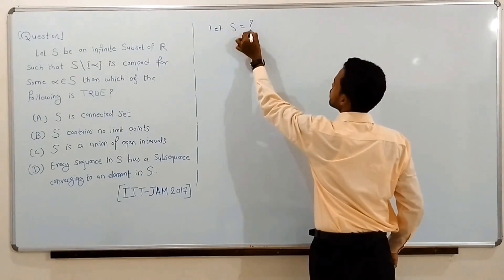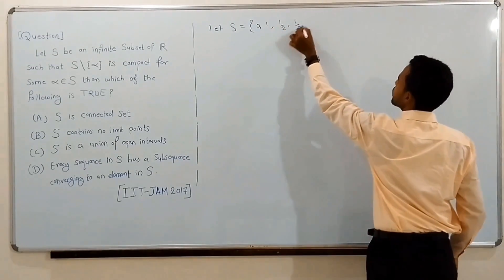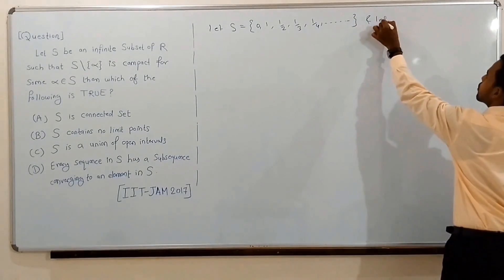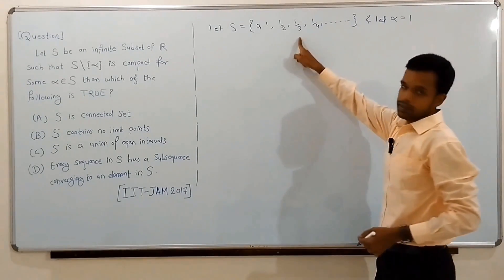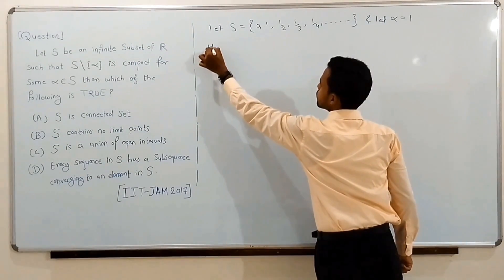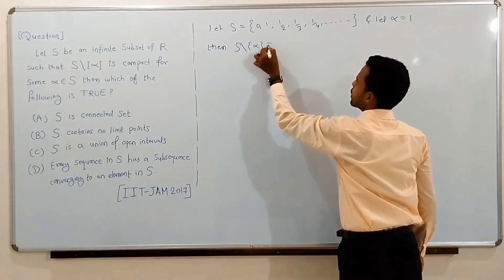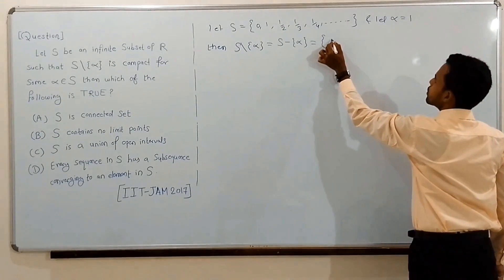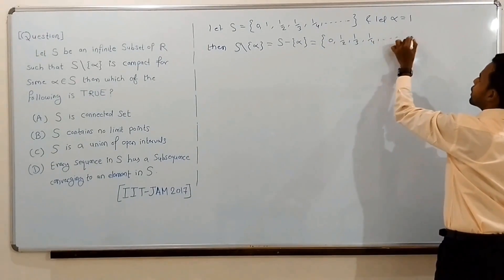Let S be the set containing 0, 1, 1/2, 1/3, 1/4, and so on, and let alpha equal 1. Clearly alpha belongs to S, which is required. Then S minus the set containing alpha is the set {0, 1/2, 1/3, 1/4, ...}.